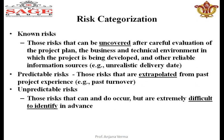Now, first we categorize risk. Known risks are those that can be uncovered after a careful evaluation of the project — evaluating the project plan, business, technical environment, and all things like unrealistic delivery dates. Predictable means those risks that have already come before — you can predict them based on past experience. Unpredictable means they come and if they occur, they are extremely difficult to identify in advance — we cannot identify them beforehand.